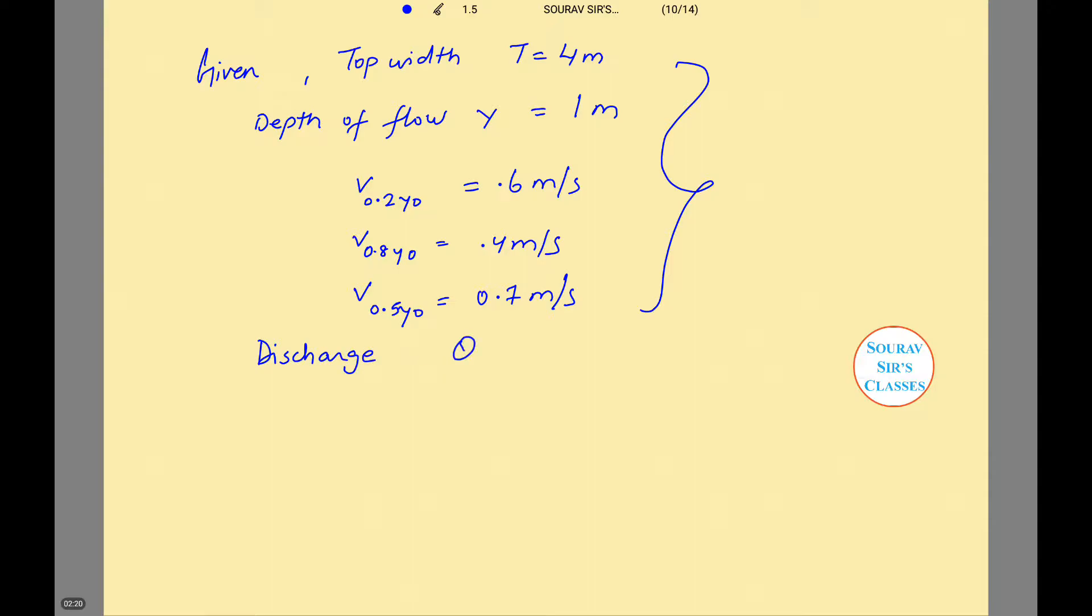Average velocity v = (v₀.₂y₀ + v₀.₈y₀)/2. Let us substitute the values: v = (0.6 + 0.4)/2 = 0.5 m/s.